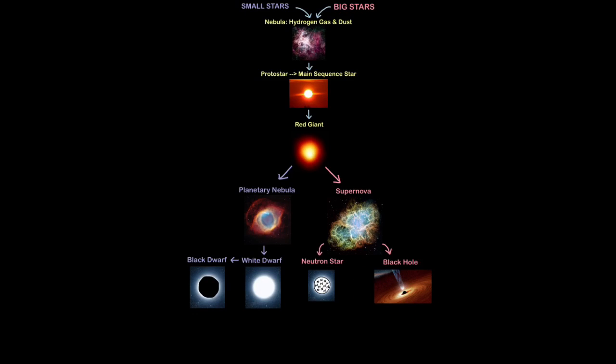Just to recap: small stars start off their life just like big stars as nebulae, then they form the main sequence star stage from a protostar and then a red giant. Only small stars will then form planetary nebulae, form a white dwarf and then a black dwarf. Big stars will basically undergo a supernova explosion, then form a neutron star, and massive stars undergo supernova then form a black hole.